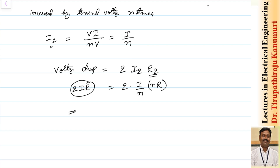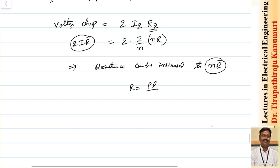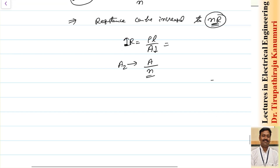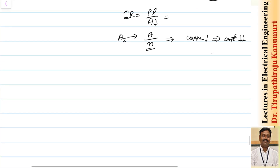We can tell the resistance can be increased to N times the initial value. We know R = ρL/A, so when resistance increases, the area should decrease. The new cross-sectional area will be A/N — the area of cross-section of the conductor can be decreased by N times. When the area of cross-section is decreased, the amount of copper required is decreased, so automatically the cost of the line is decreased and initial investment is reduced.